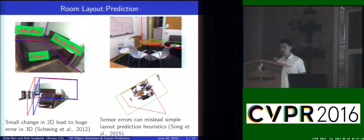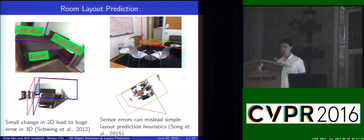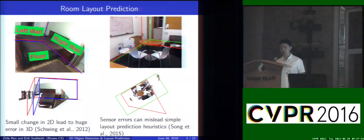There's also another task called room layout prediction. The idea is to predict floor, ceilings, and walls. There are generally two types of approaches. The first one is to directly operate on the 2D image itself and treat this as a labeling problem. However, if you back-project the 2D prediction to 3D, small changes in 2D can lead to really huge errors. There's also another type of approach which works directly on the 3D cuboids. However, due to sensor errors, it can mislead simple layout prediction heuristics.